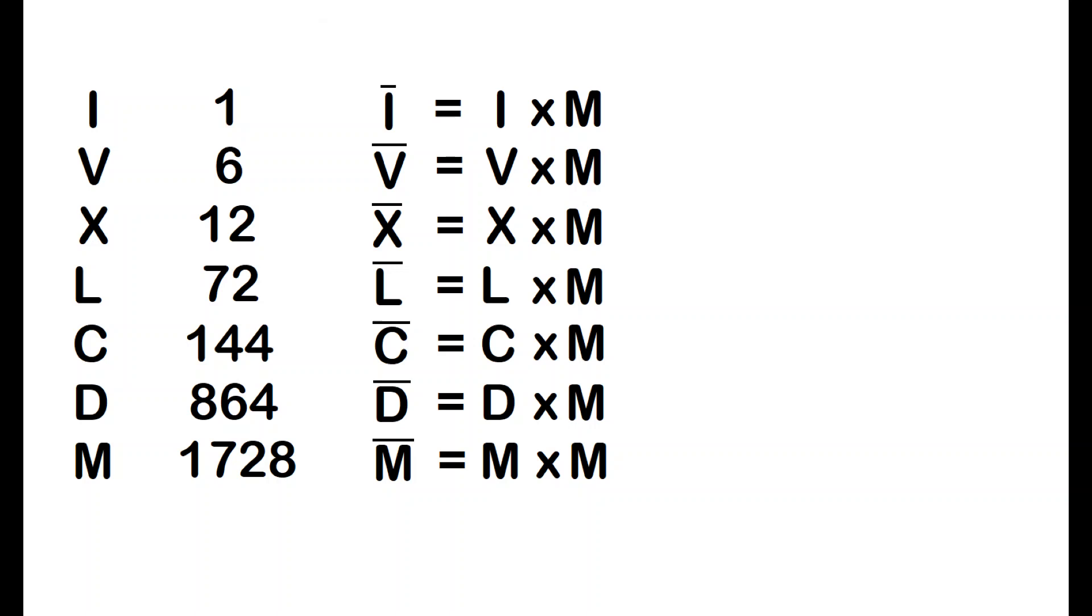Assuming that was the same principle in base twelve, we'd be achieving almost three million in a single overscored character.